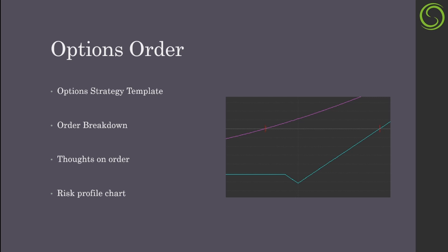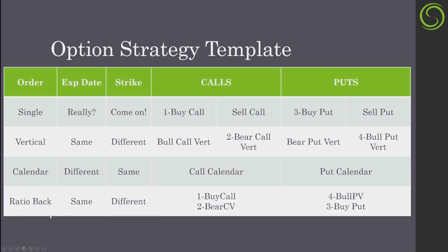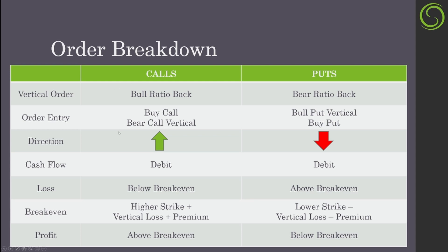The ratio back order is going to have the same expiration date — that's the traditional setup. The strikes are going to be different. For the bullish or bearish back order, you start out with a credit vertical. On the call side it starts with a bear call vertical, and on the higher leg you buy a call. For the puts, you start with a bull put vertical and on the lower leg you buy a put to make it a directional play.